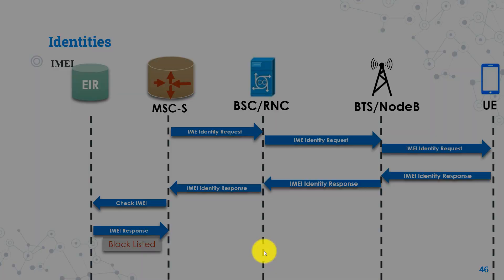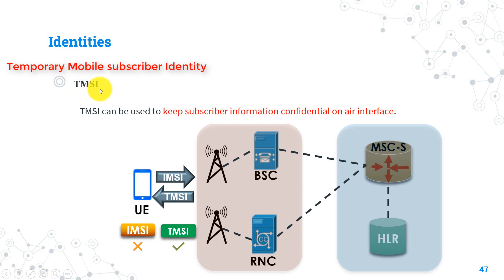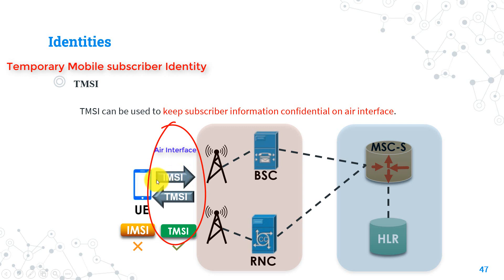Now back again to the user identities. We have the TMSI, which stands for Temporary Mobile Subscriber Identity. From its name, it is a temporary identifier given to each mobile subscriber. Mobile operators decided that IMSI is an important identifier that needs to be more secured. As mentioned before, IMSI is used by the mobile user to identify themselves while communicating with the mobile network on the air interface. So instead of sending the IMSI over the air interface each time, we can send the TMSI instead, to better protect the IMSI from hackers who could trace it and learn the user's activities.